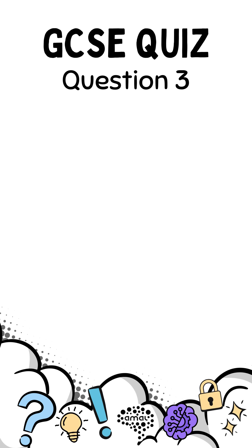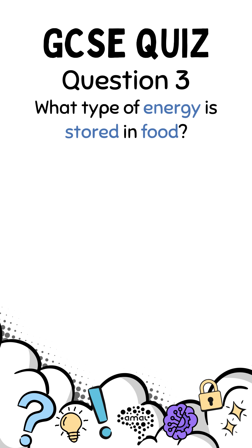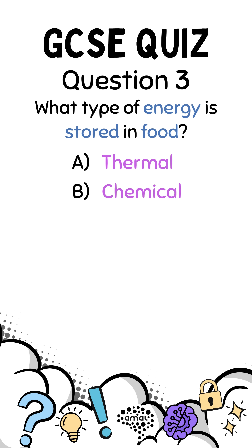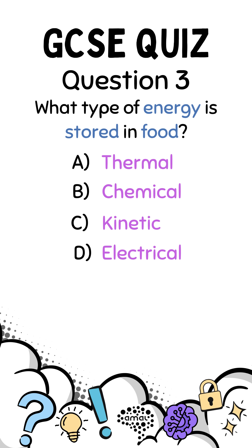Question 3: What type of energy is stored in food? A. Thermal, B. Chemical, C. Kinetic, D. Electrical.